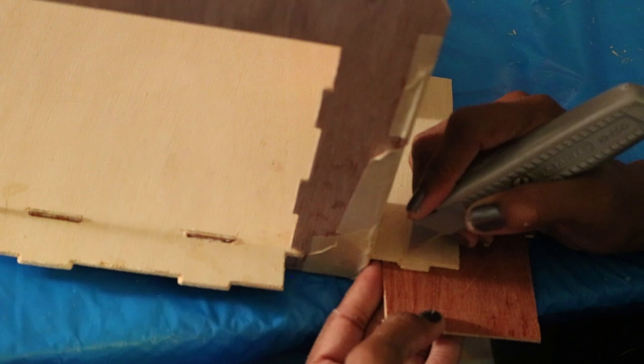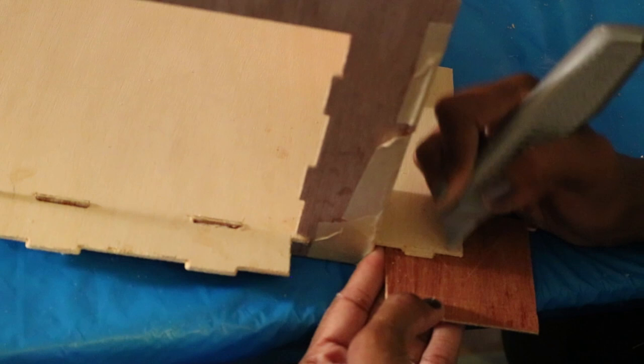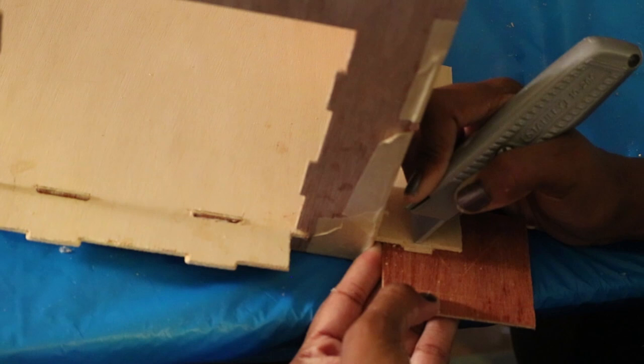Here I'm cutting the tabs off the porch since I won't be using the benches. If you know you don't want the benches, go ahead and cut these off before you assemble the dollhouse.